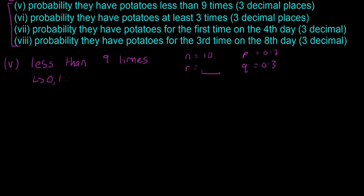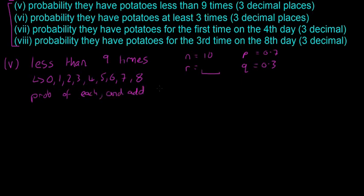Less than nine times means 0, 1, 2, 3, 4, 5, 6, 7, or 8 — all of these outcomes where they have potatoes zero times, one time, two times, etc. You'd have to find the probability of each one and add them all together. That's eight different calculations, which takes a long time. But there is a much quicker way.